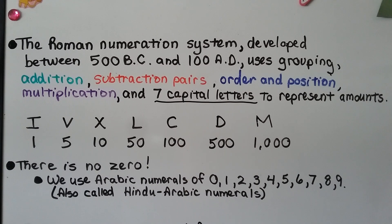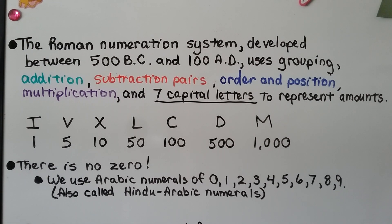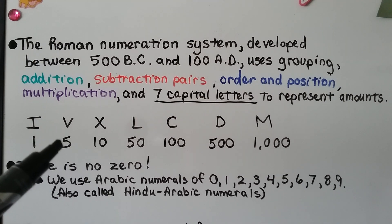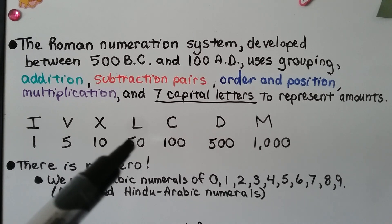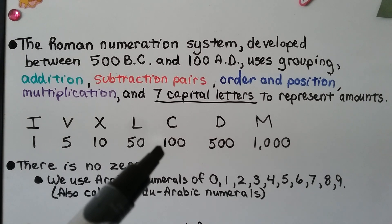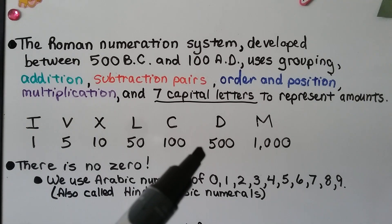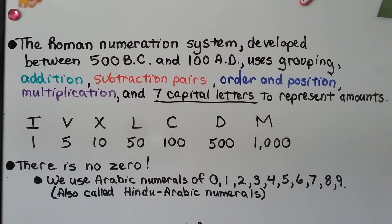The Roman numeration system, developed between 500 BC and 100 AD, uses grouping, addition, subtraction pairs, order and position, and multiplication — and seven capital letters to represent amounts. The letter I is equal to 1, V equal to 5, X equal to 10, L equal to 50, C equal to 100, D equal to 500, and M equal to 1,000.